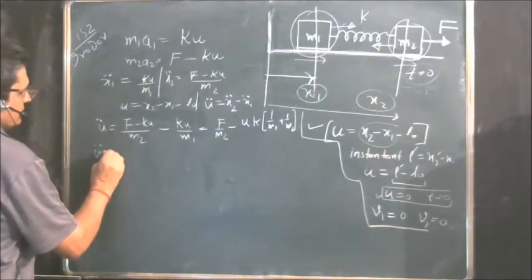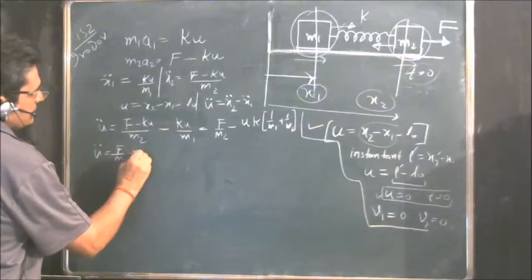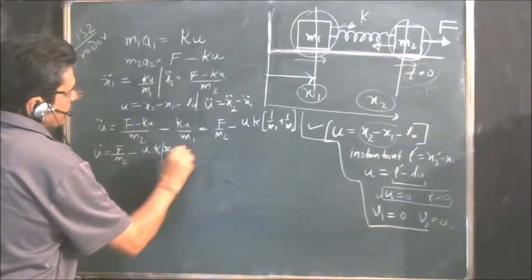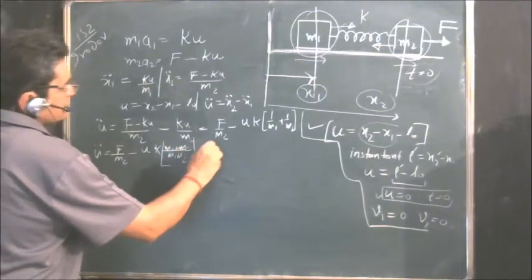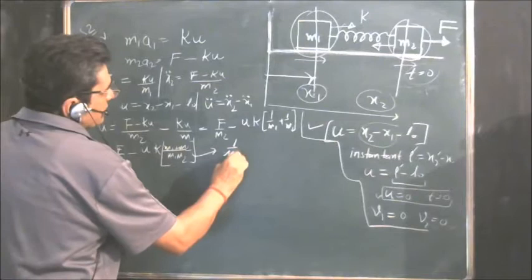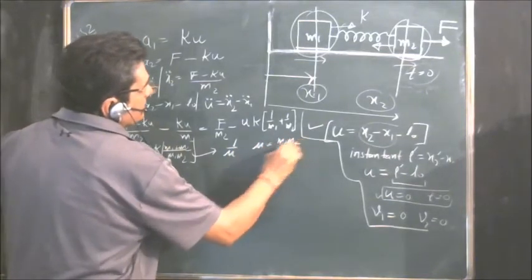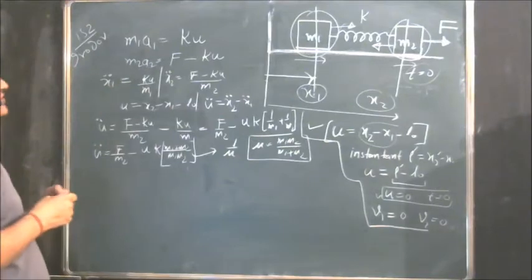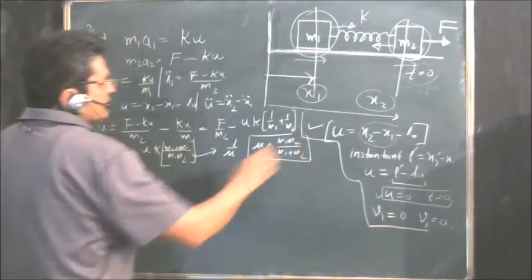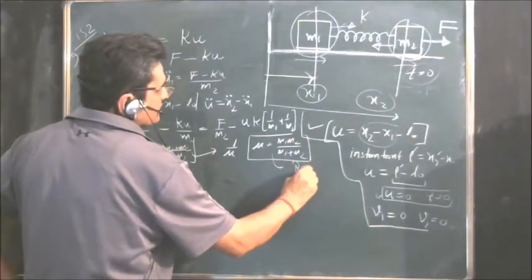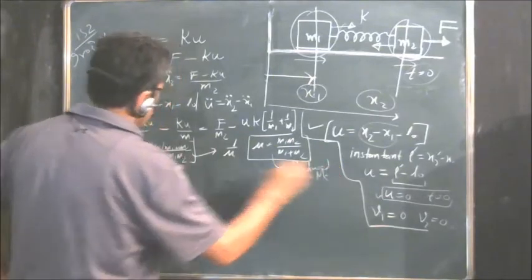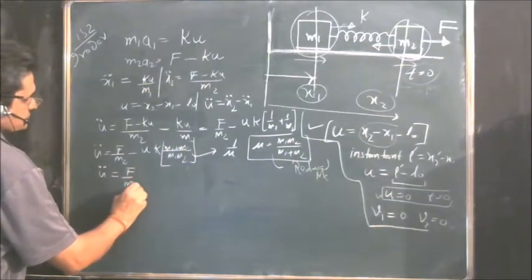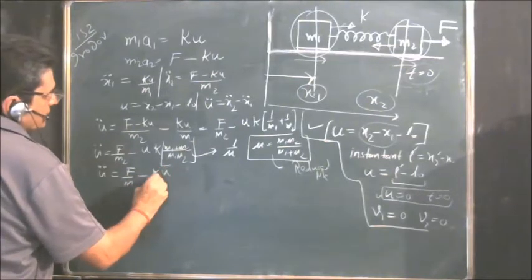So u double-dot equals F upon m2 minus u·k times (m1 plus m2) upon (m1·m2). We place this as equal to 1 upon μ, where μ equals m1·m2 upon (m1 plus m2). We call it the reduced mass. Whenever there are two masses connected by a spring, take μ equals m1·m2 upon (m1 plus m2). Placing this value, u double-dot equals F upon m2 minus k·u upon μ.